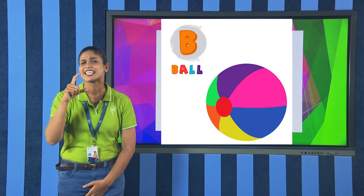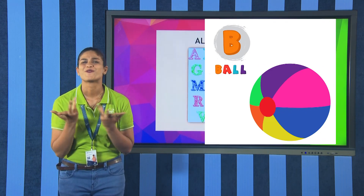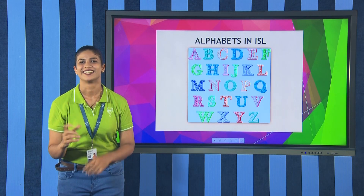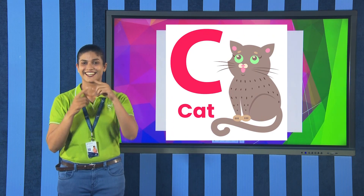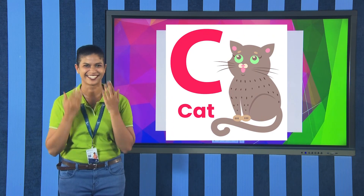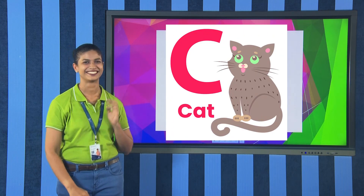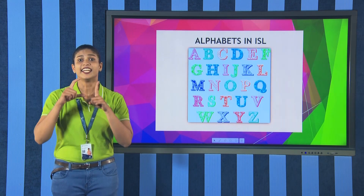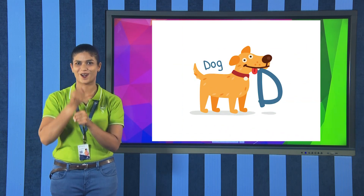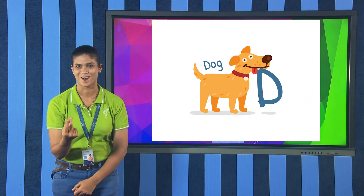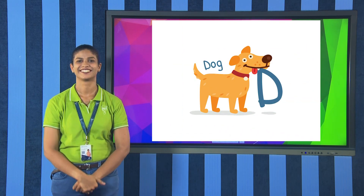Next, C — what is the word connected with C? C, A, T — cat. What is the word starting with D? D, O, G — sign for dog.